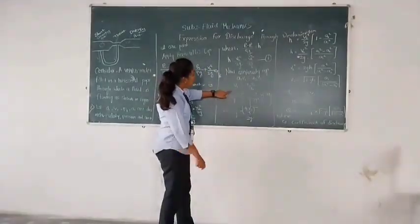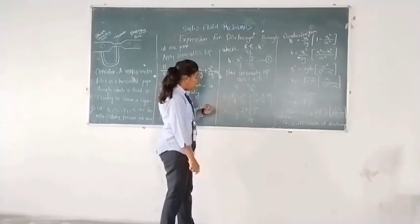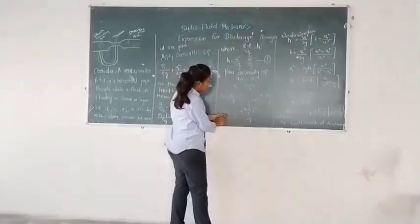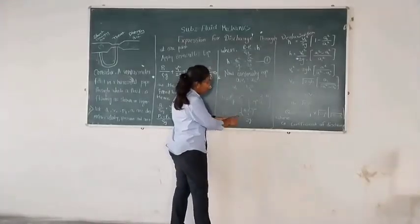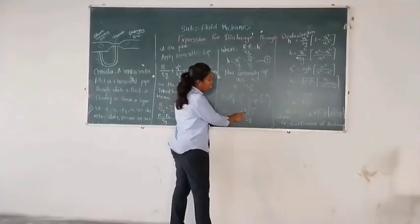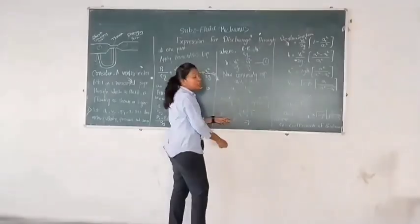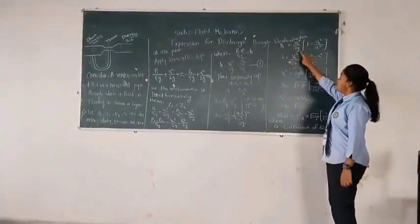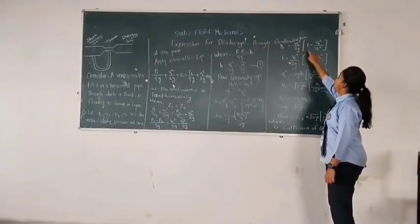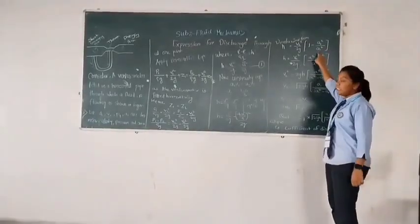So it becomes H = V2²/2g - (A2·V2/A1)²/2g. H = V2²/2g[1 - A2²/A1²].